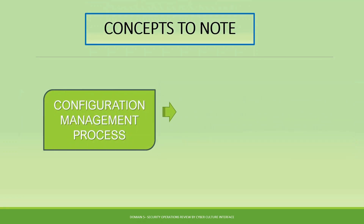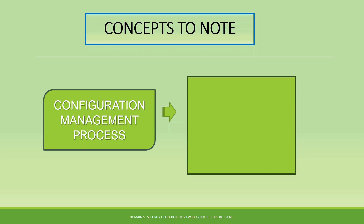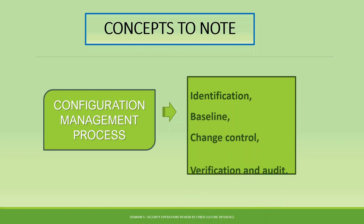The configuration management process is made up of four steps: identification — identify the data and whoever is trying to make the change; baseline — measure the requested changes against certain policies or standards; change control — monitor how the changes have been implemented; and verification and audit — verify the configuration change was made correctly and conduct an audit to ensure the right changes were applied.